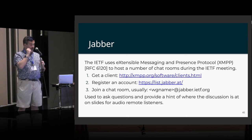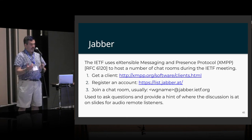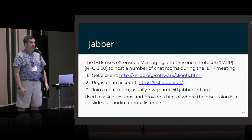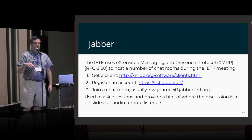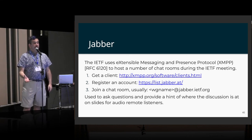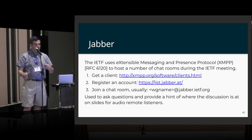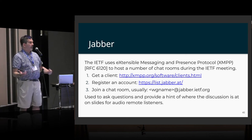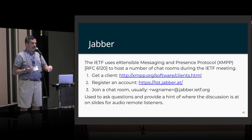Jabber: every working group has a Jabber room, for example group-chat at dnsop@jabber.ietf.org for the DNS operations group. Search for a free Jabber client and get an account on any server — you don't have to register on the IETF server. At every meeting, a Jabber scribe writes down the name of who's speaking and the slide number so remote participants can follow along. If a remote participant wants to speak, they type it in, the scribe gets to cut to the front of the line, and relays their comment.